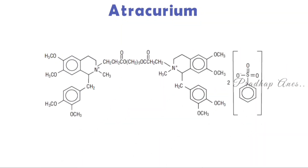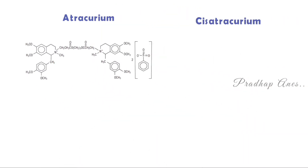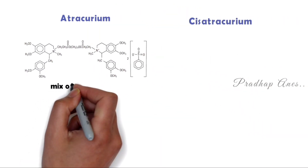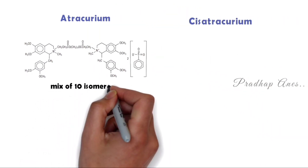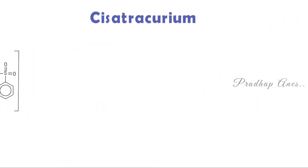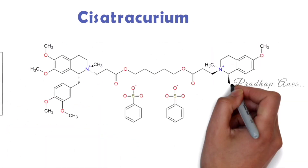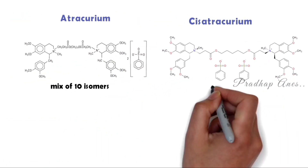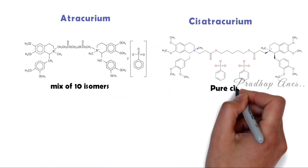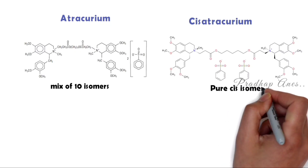Atricurium has a structured mix of 10 isomers. But Cisotricurium has a structure with a pure cis isomer.